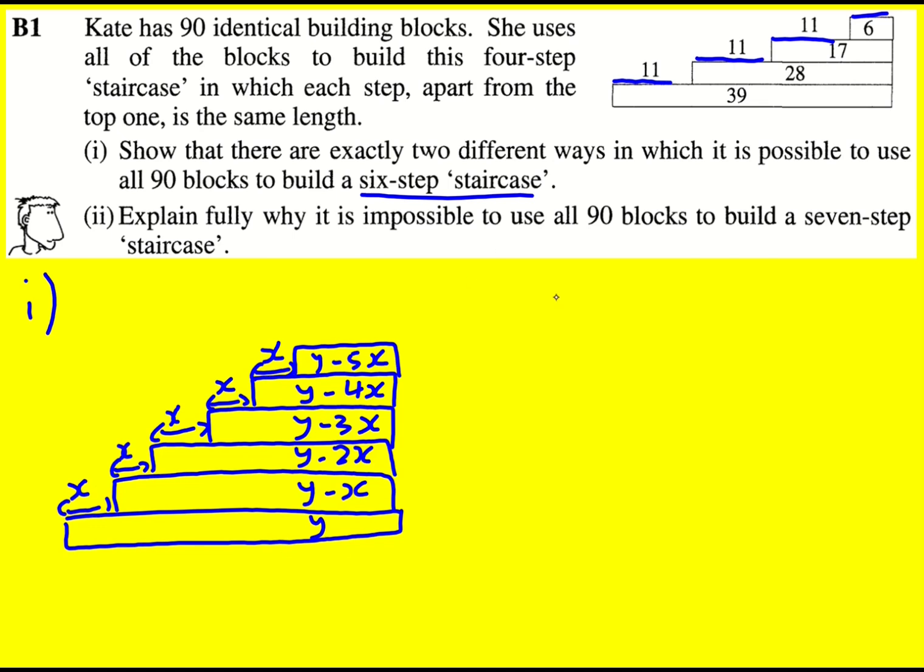So if I add all of these up, which will give 6y minus 15x, this must equal 90. And I've actually created what we call a Diophantine equation. It's an equation with more than one unknown, but they give integer solutions. Although in this case, I need x and y to be greater than zero.